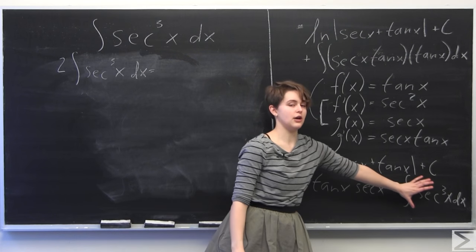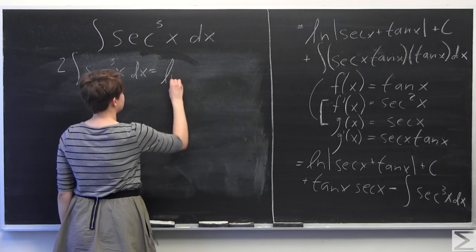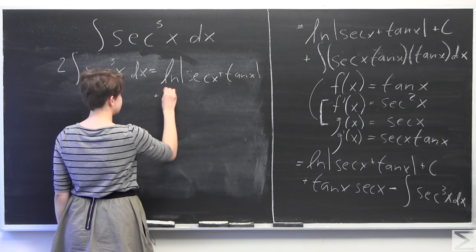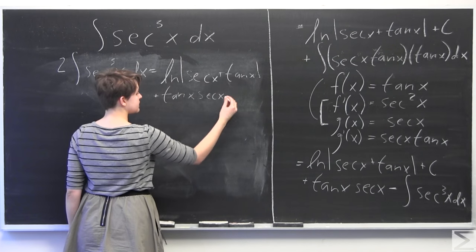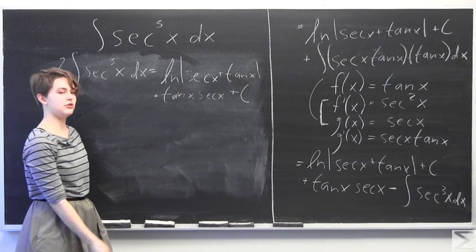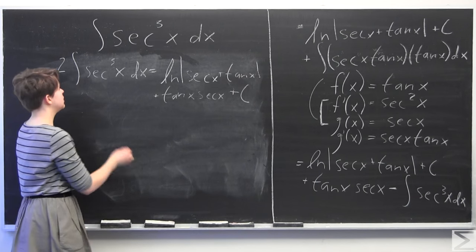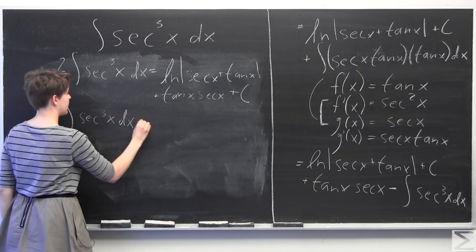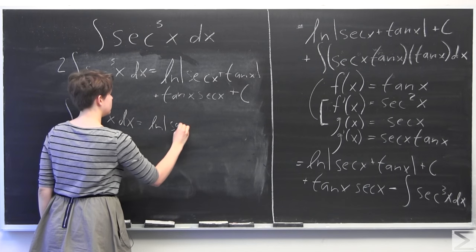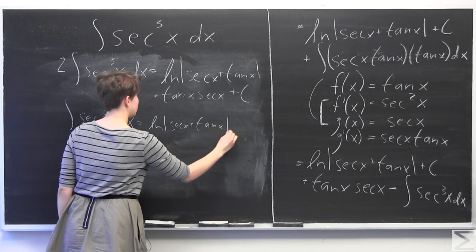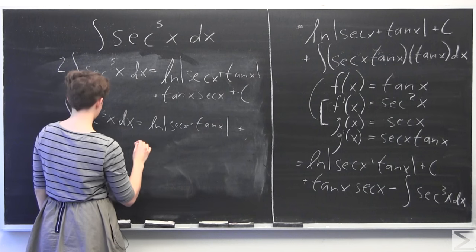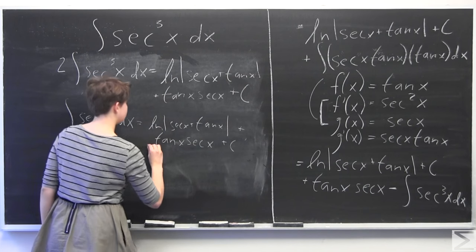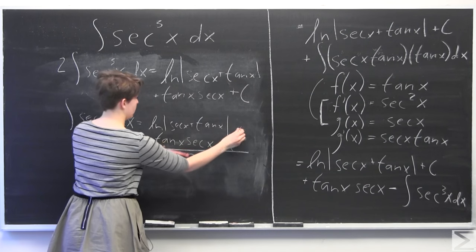Basically, all that remains when you remove the secant cubed integral from the right is ln of the absolute value of secant of x plus tangent of x, plus tangent x times secant x, plus c. In order to finish solving the problem, we divide by 2. So the integral of secant cubed of x dx equals one-half times the quantity ln of the absolute value of secant of x plus tangent of x, plus tangent of x times secant of x, plus c.